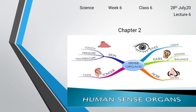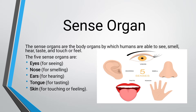Assalamu alaikum students, how are you all? Hope you are fine at your homes. We have completed our first chapter. Now we will move towards the second chapter, which is sense organs. Sense organs are the body organs by which humans are able to see, smell, hear, taste, and touch or feel. We have five sense organs.